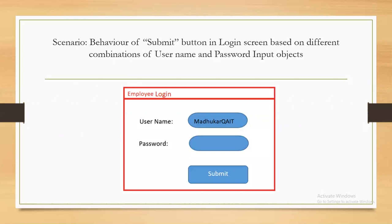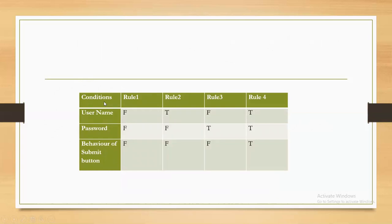Let us consider an example. Here I have an employee login screen with username and password input fields, and a submit button. For this scenario, how is the decision table going to look? The conditions we consider are the input objects: username, password, and the behavior of the submit button.